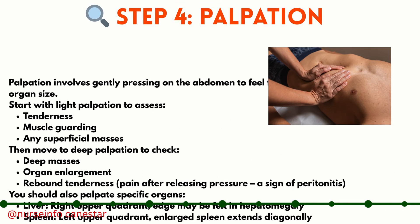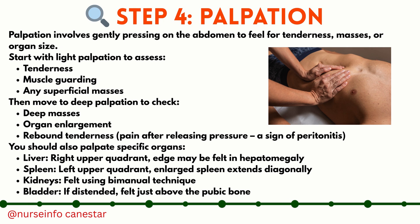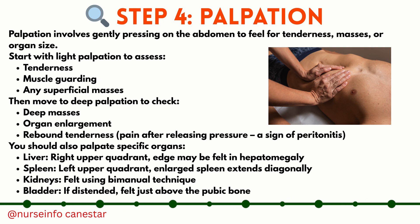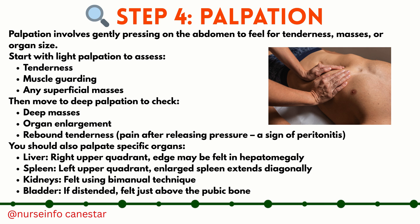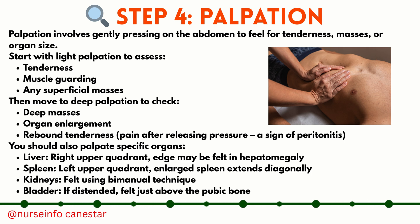Step four: palpation. Palpation involves gently pressing on the abdomen to feel for tenderness, masses, or organ size. Start with light palpation to assess tenderness, muscle guarding, and any superficial masses, then move to deep palpation to check for deep masses, organ enlargement, and rebound tenderness — pain after releasing pressure, which is a sign of peritonitis.